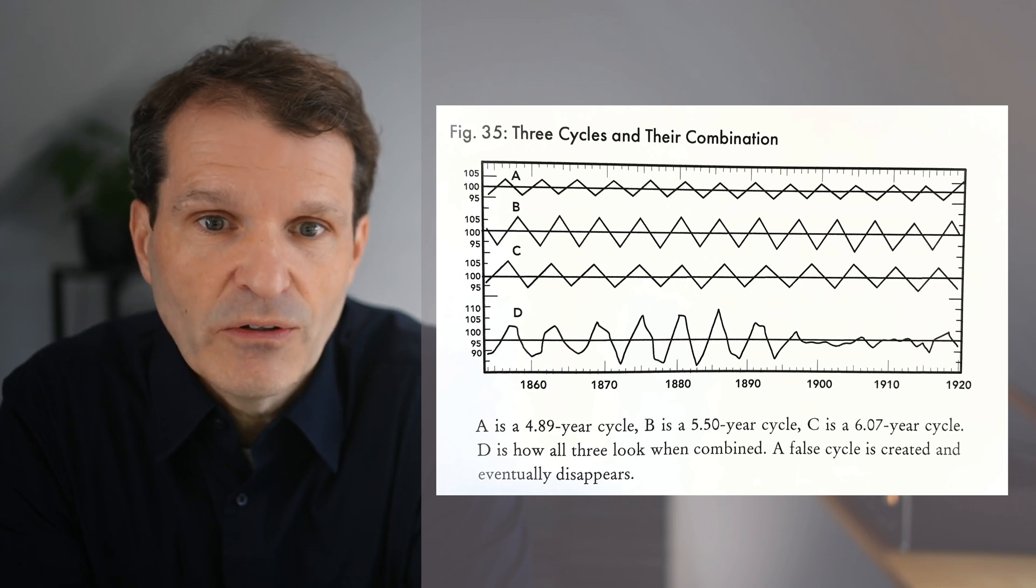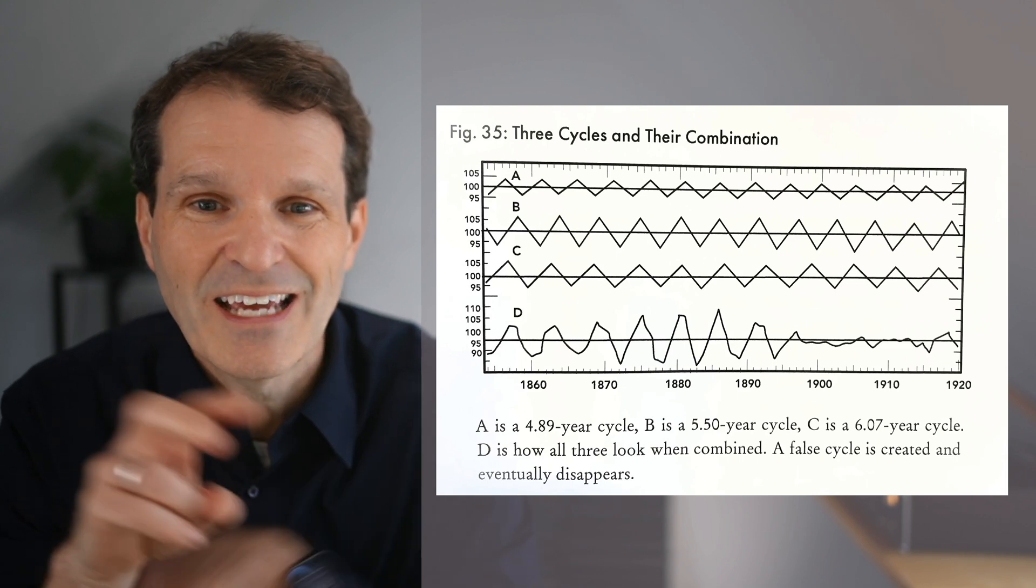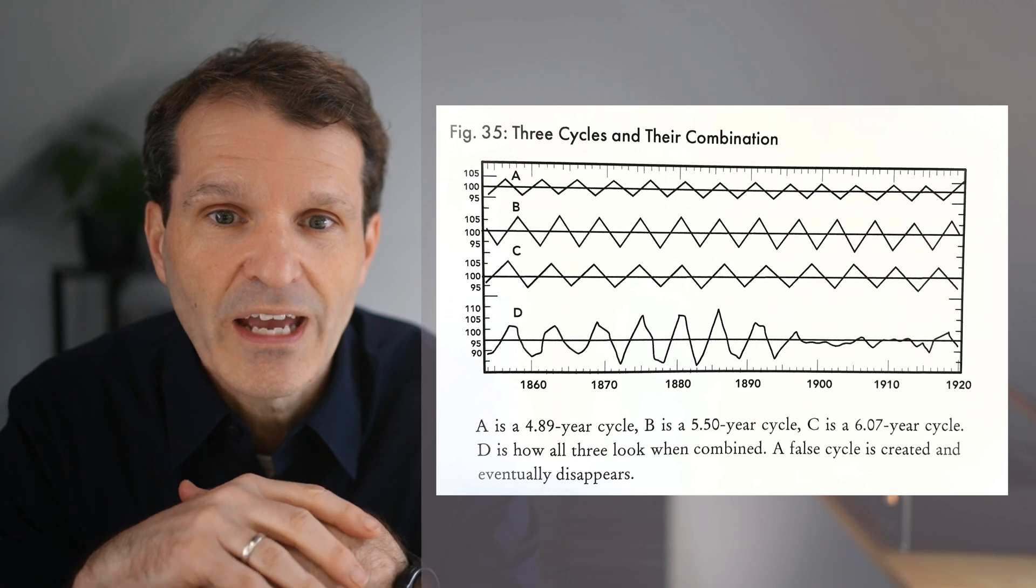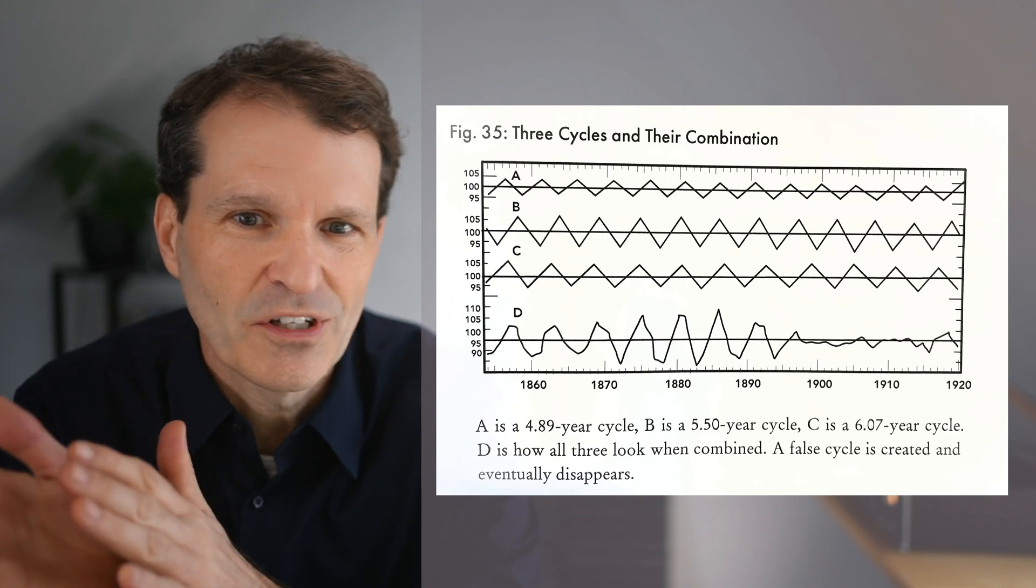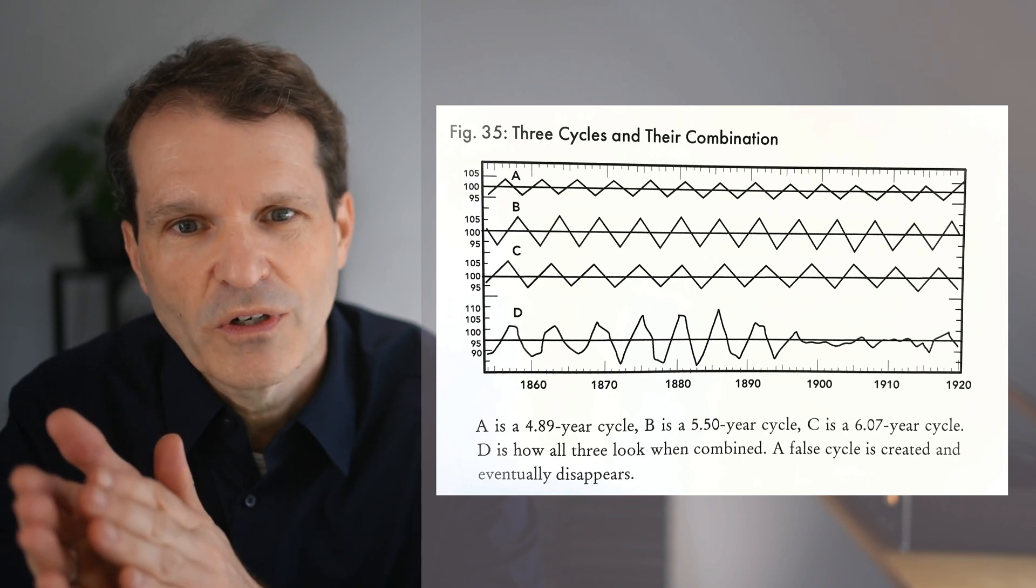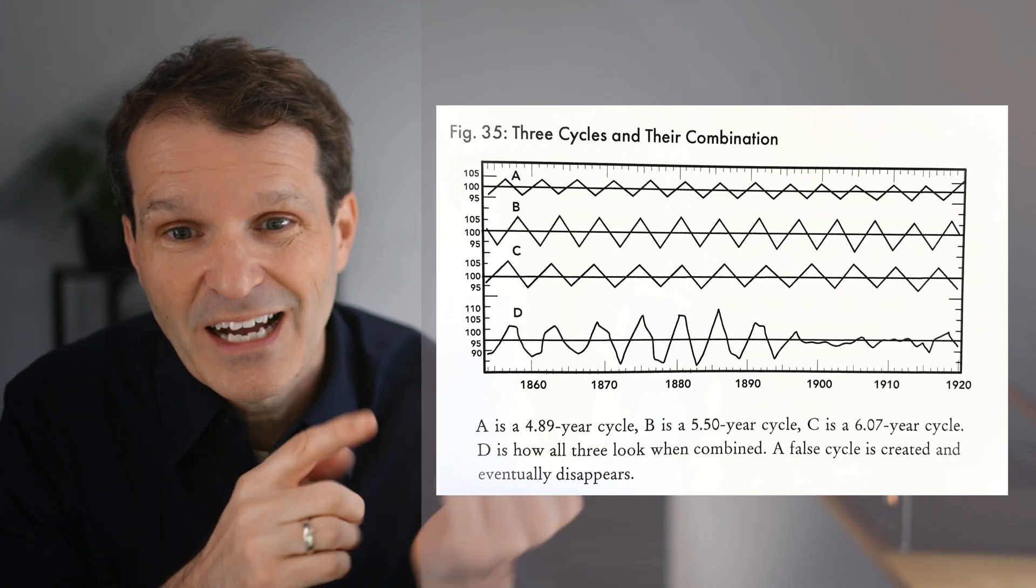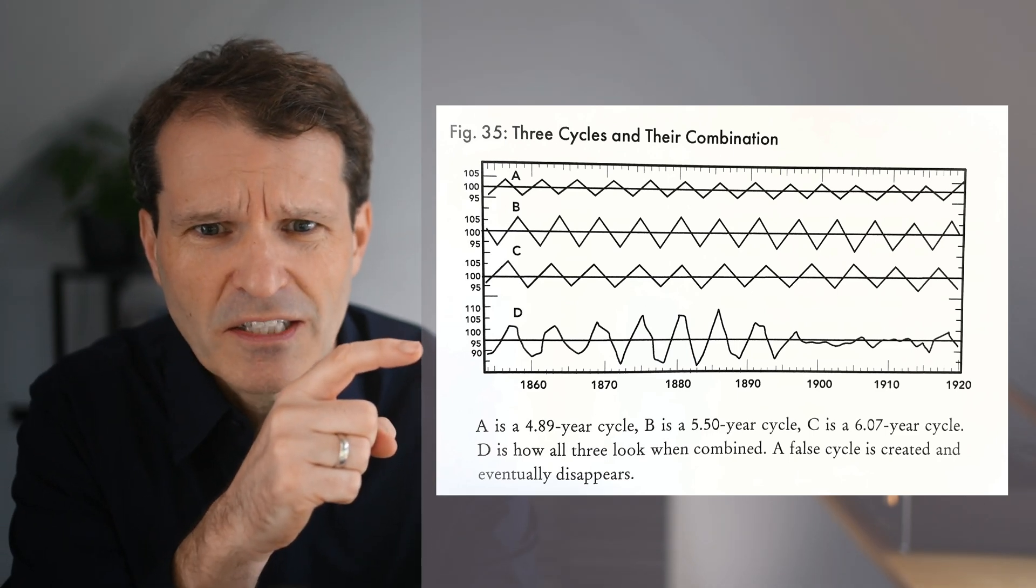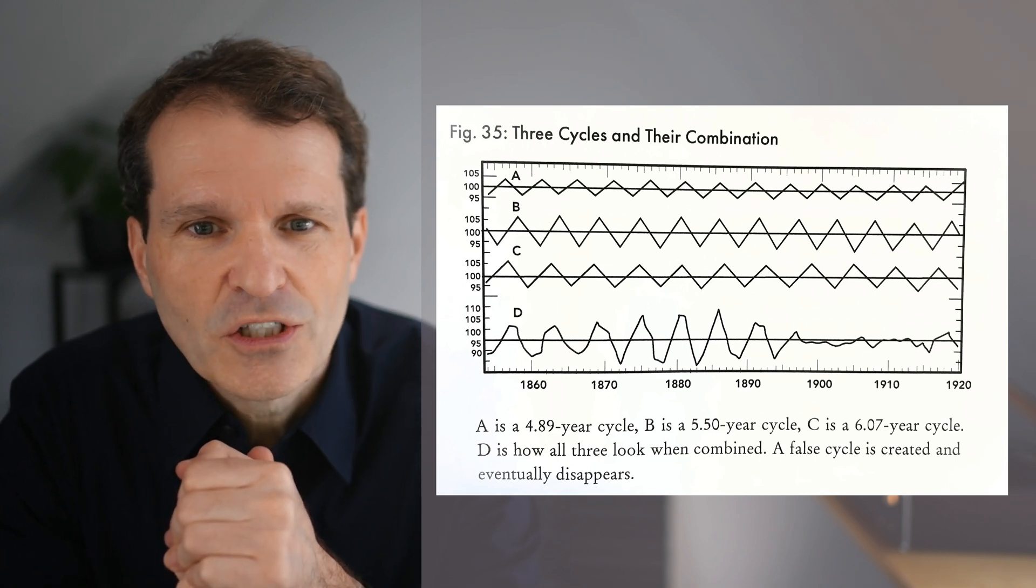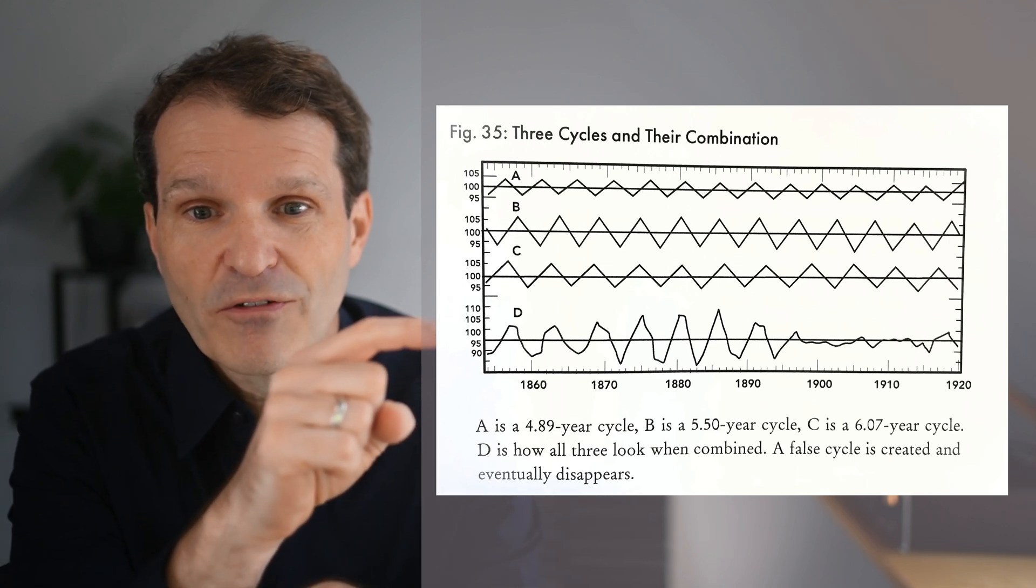If you just start at the bottom, it looks like this is one cycle, and around the year of 1900 it seems to fade away or fade out. The cycle disappears. That's what we're often observing—sometimes we detect a cycle and then the cycle is not of any help anymore on the right side of the chart.